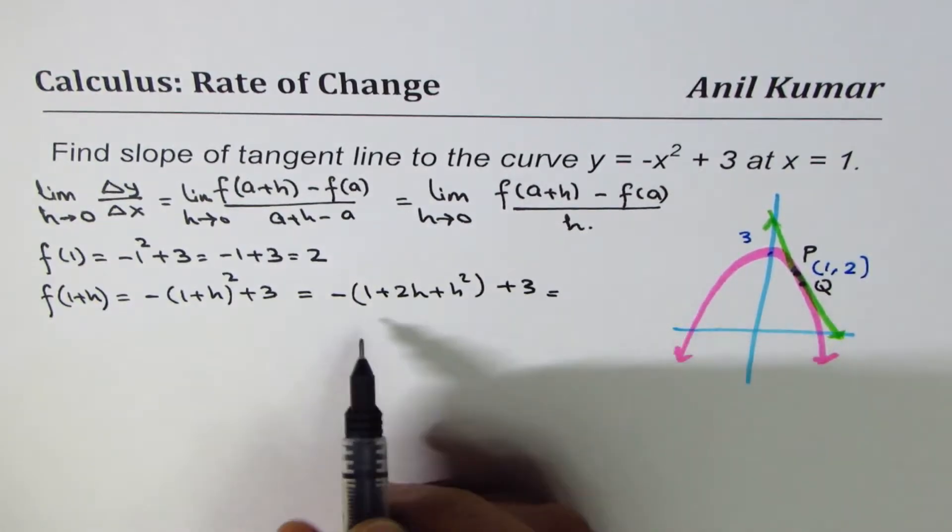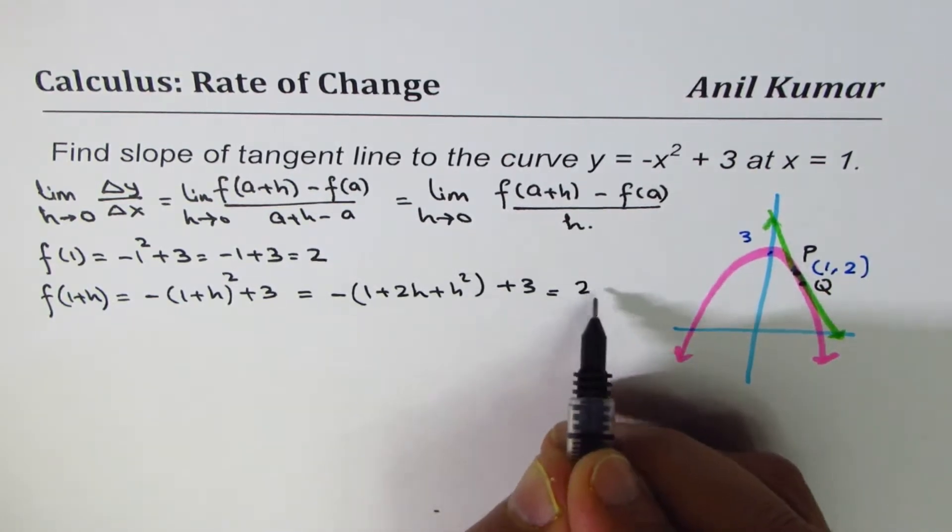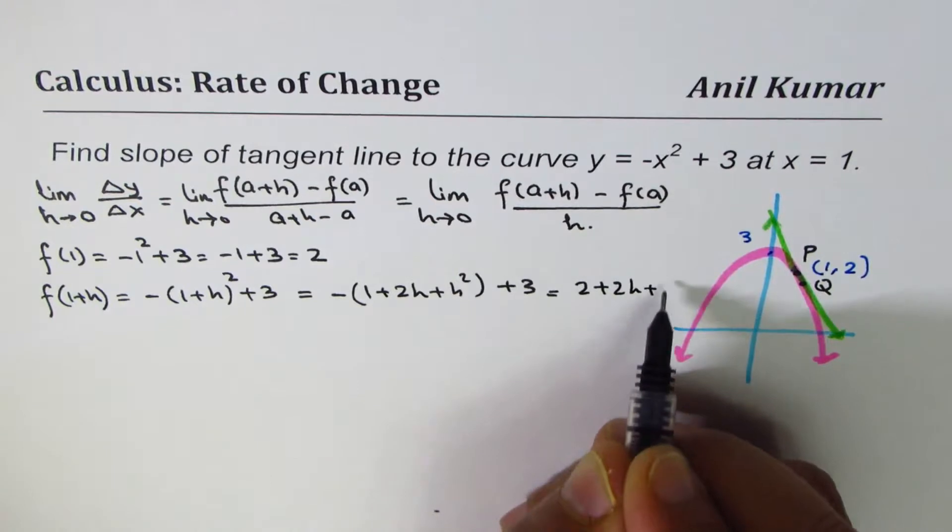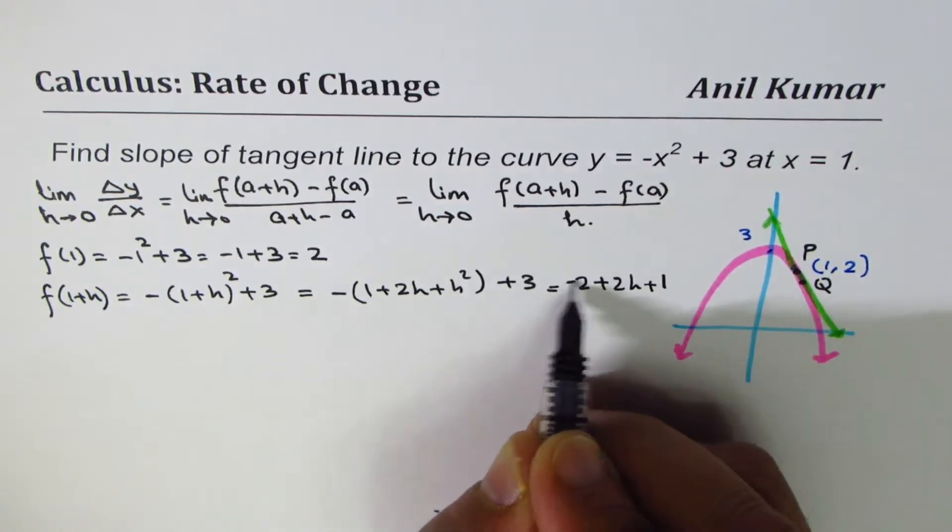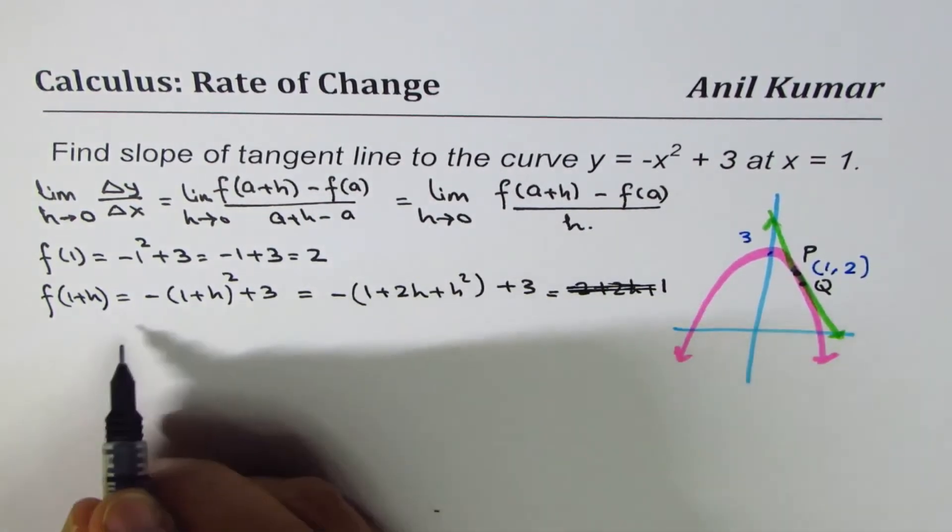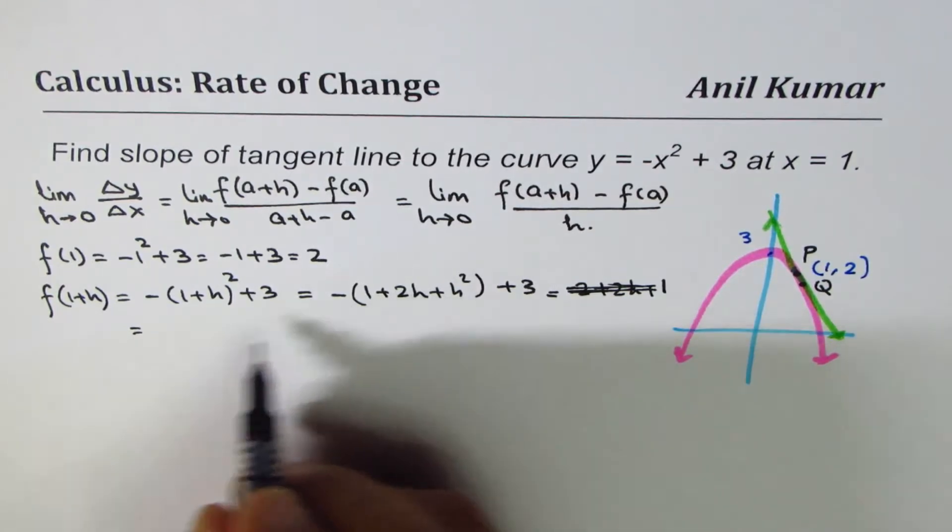And that is equal to, 1 - 3 is 2. So we get 2 + 2h plus... let's rewrite this. I should have taken minus outside. So let's write like this,